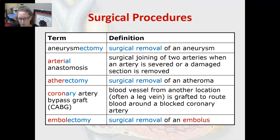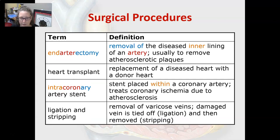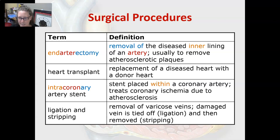An embolectomy is the surgical removal of an embolus — a loose clot traveling through the circulation. An endarterectomy is the removal of a diseased inner lining of an artery, usually to remove atherosclerotic plaque. A heart transplant is the replacement of a diseased heart with a donor heart.